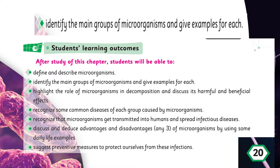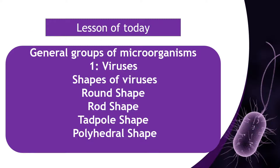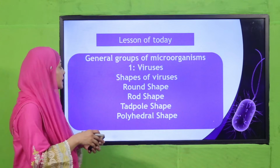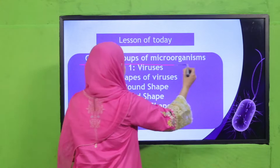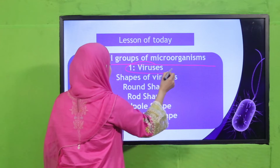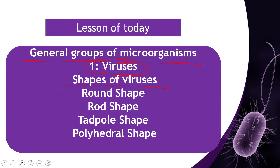Today all students will be able to identify the main groups of microorganisms and give an example for each. We will specifically discuss about viruses and their examples. Today's lesson is the general groups of microorganisms, and we will discuss viruses in detail — their shapes: how many shapes there are — round, rod, tadpole, and polyhedral.